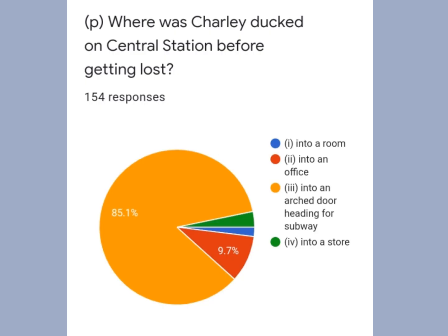This is Question 4, O part. Why has the poet used the imagery of merry children spilling out of their homes? Many students gave the correct answer, option 2: to show happiness and youth as against old age. Question 4, P part: where was Charlie ducked on Central Station before getting lost? Most students gave the right answer, option 3: into an arched door heading for the subway.